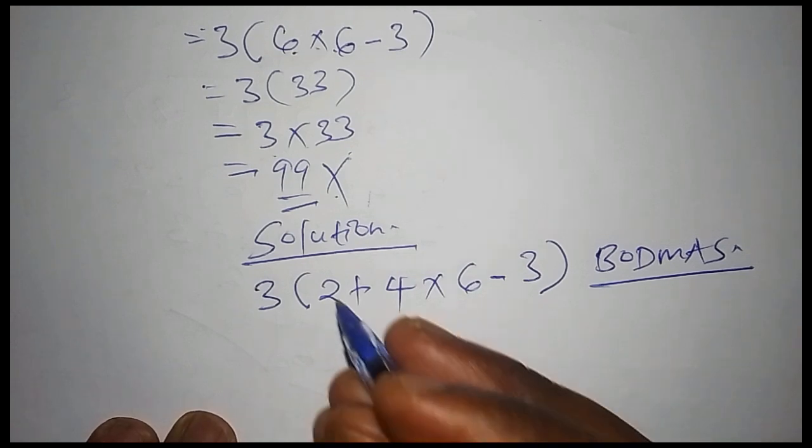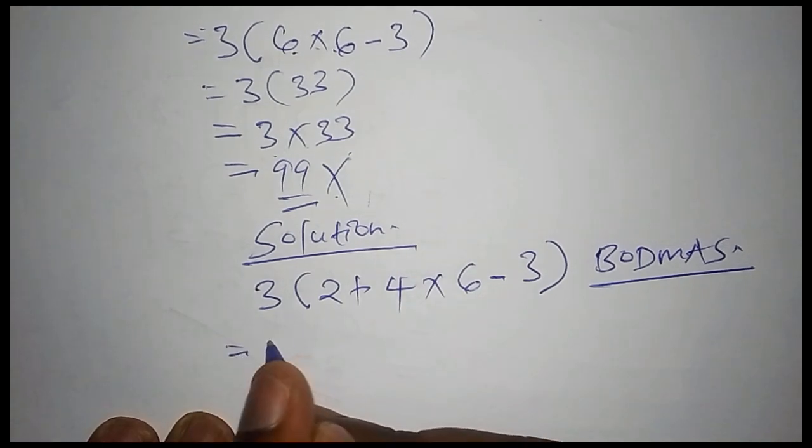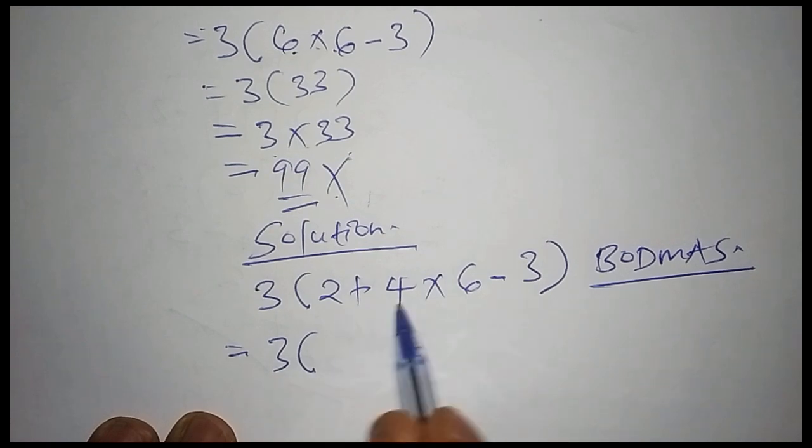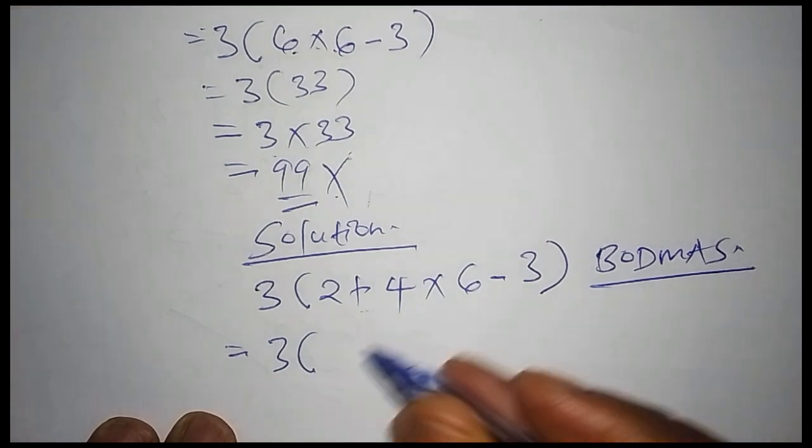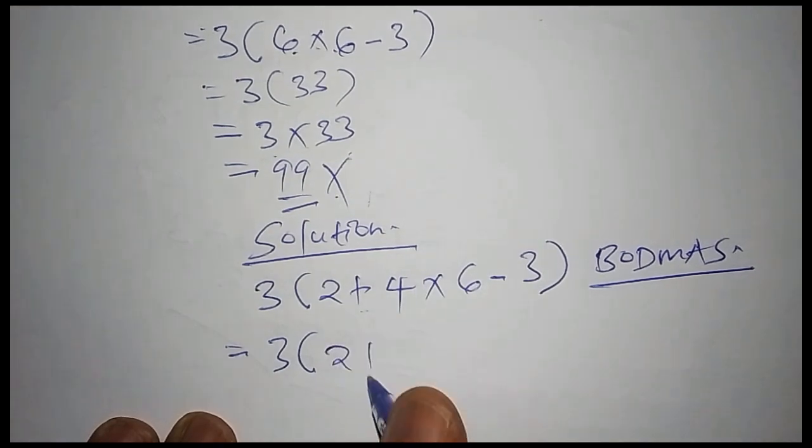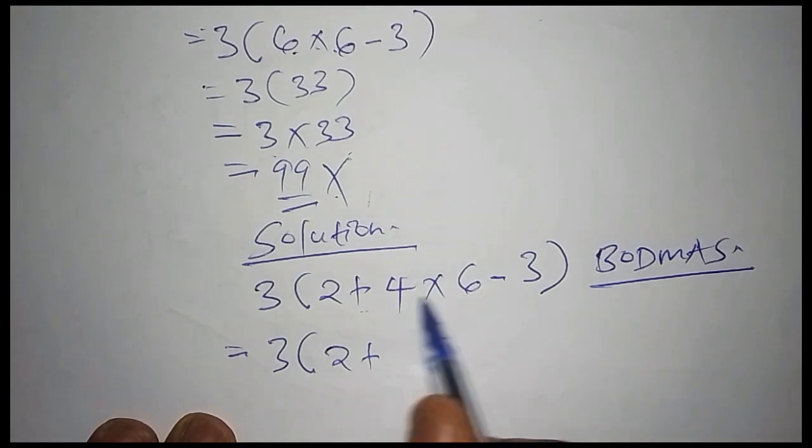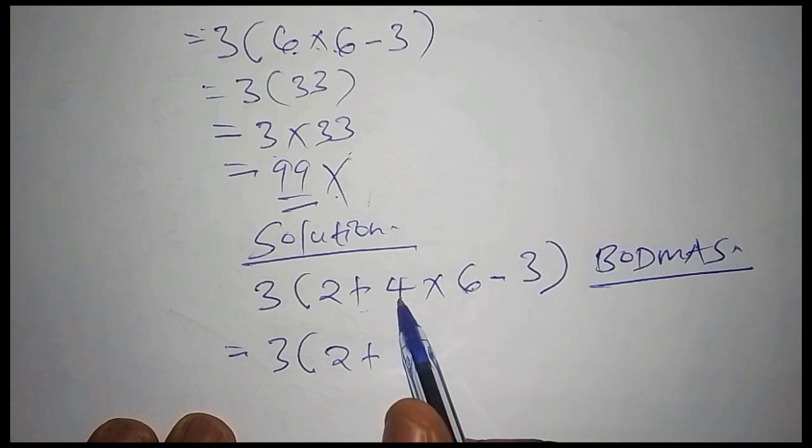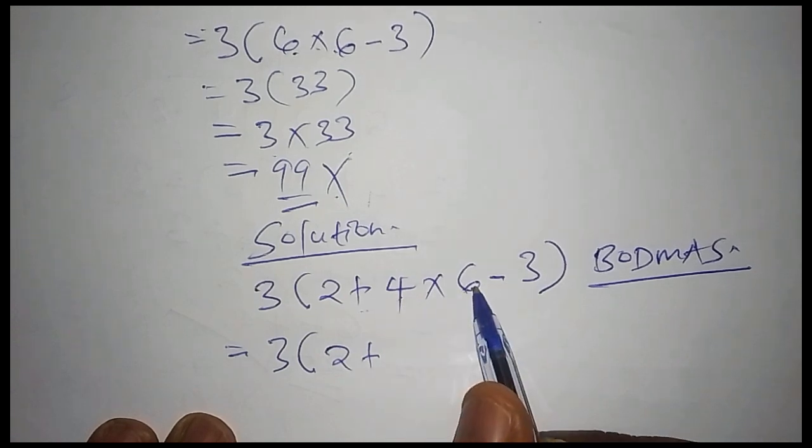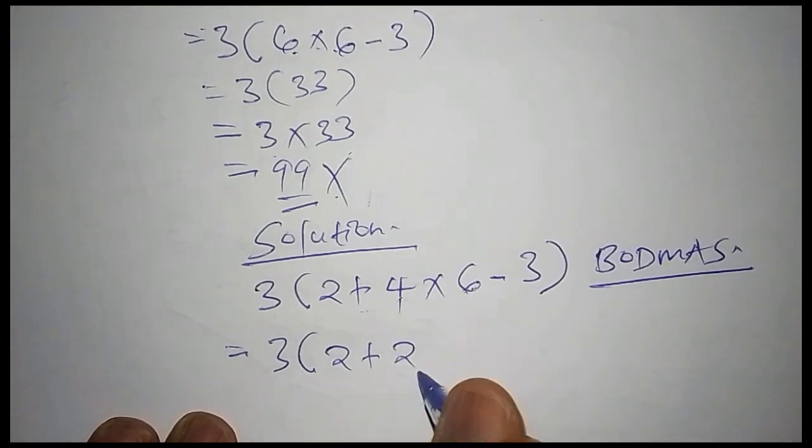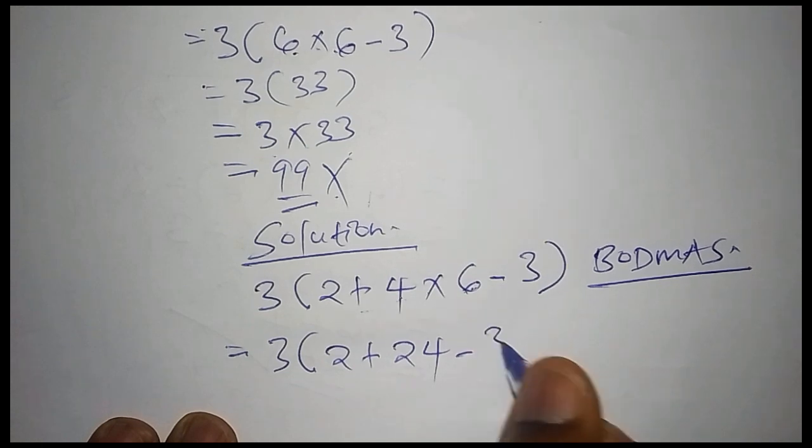Now here we shall say this one is equals to 3 into bracket. You do not work out this one first. You simply say 2 add to, add to, now here is the multiplication sign. We have to work out 4 multiply by 6 first, and there we shall have 24 subtract from 3, then we close the bracket.